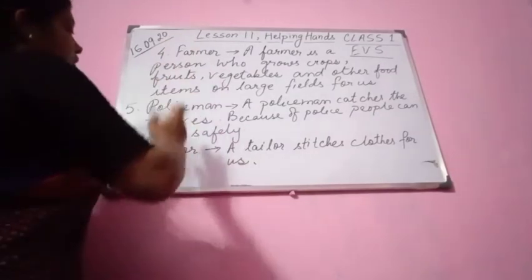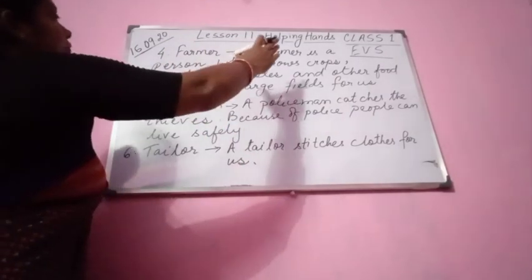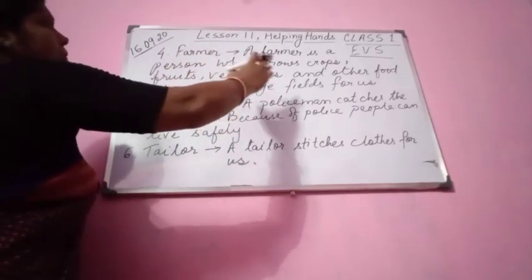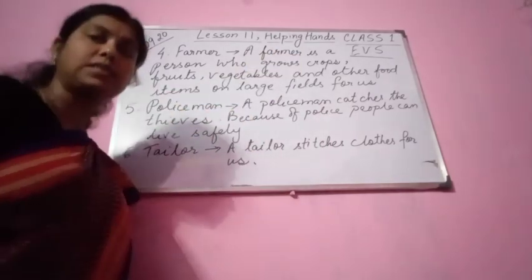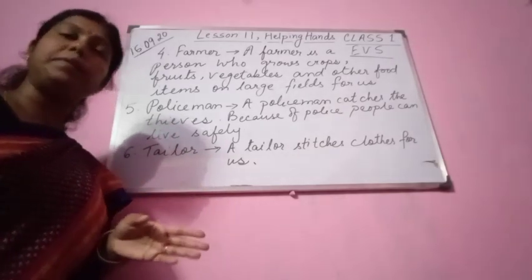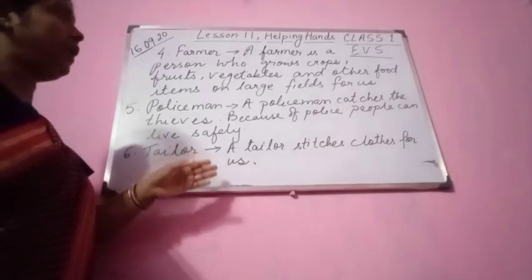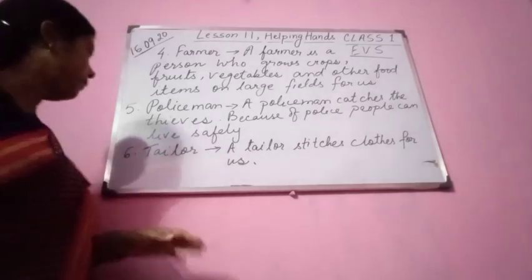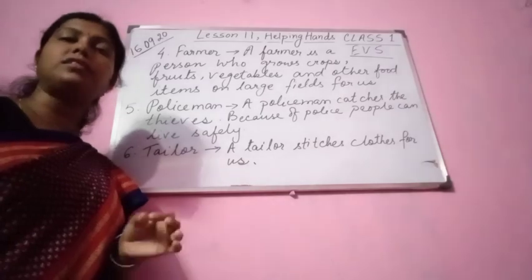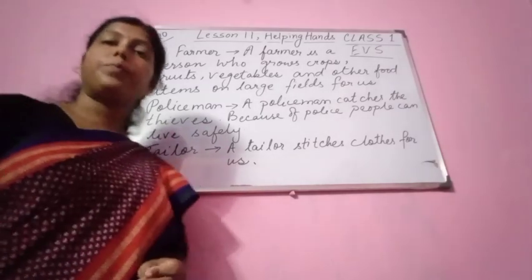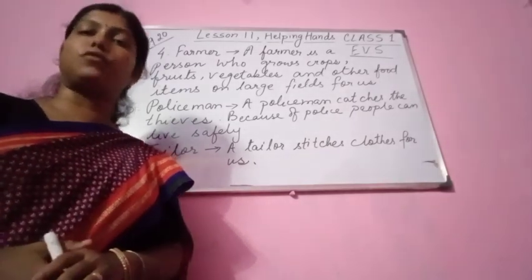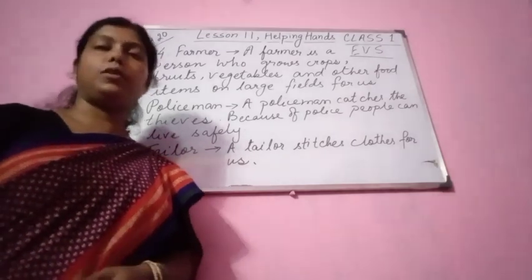In today's class we discussed about farmer, policeman and tailor. A farmer is a person who grows crops, fruits, vegetables and other food items on large fields for us. A policeman catches the thieves; because of police, people can live safely in the society. A tailor stitches clothes for us. Children, please go through whatever was given in class and learn them. Thank you.